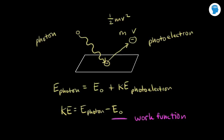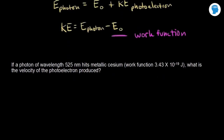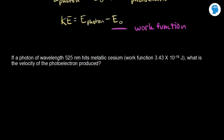Let's do a problem. Now that we understand the general idea of the photoelectric effect, let's look at what this problem asks us. The problem says: if a photon of wavelength 525 nanometers hits metallic cesium — here's the work function for metallic cesium — what is the velocity of the photoelectron produced? The velocity is hiding in the kinetic energy, and we know the work function E₀, but we need to calculate the energy of the photon first.